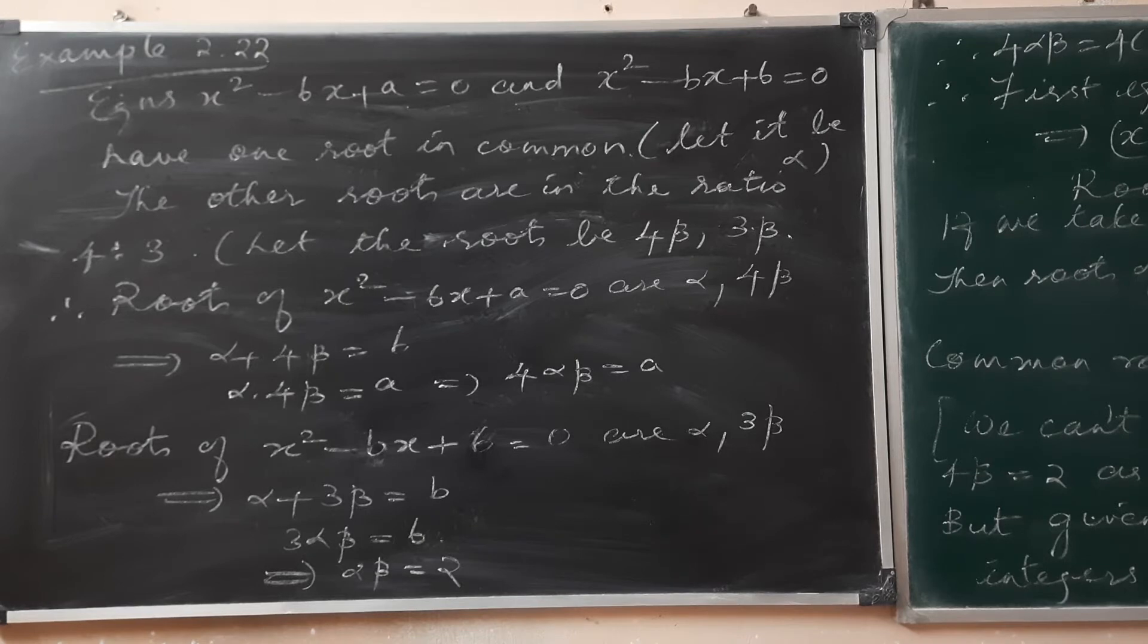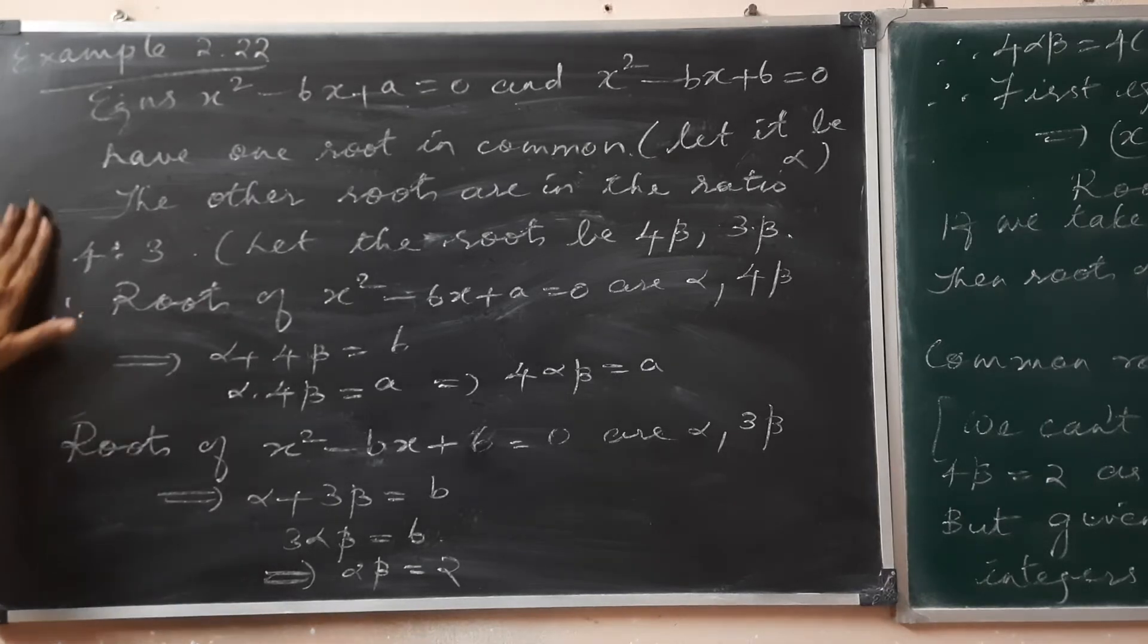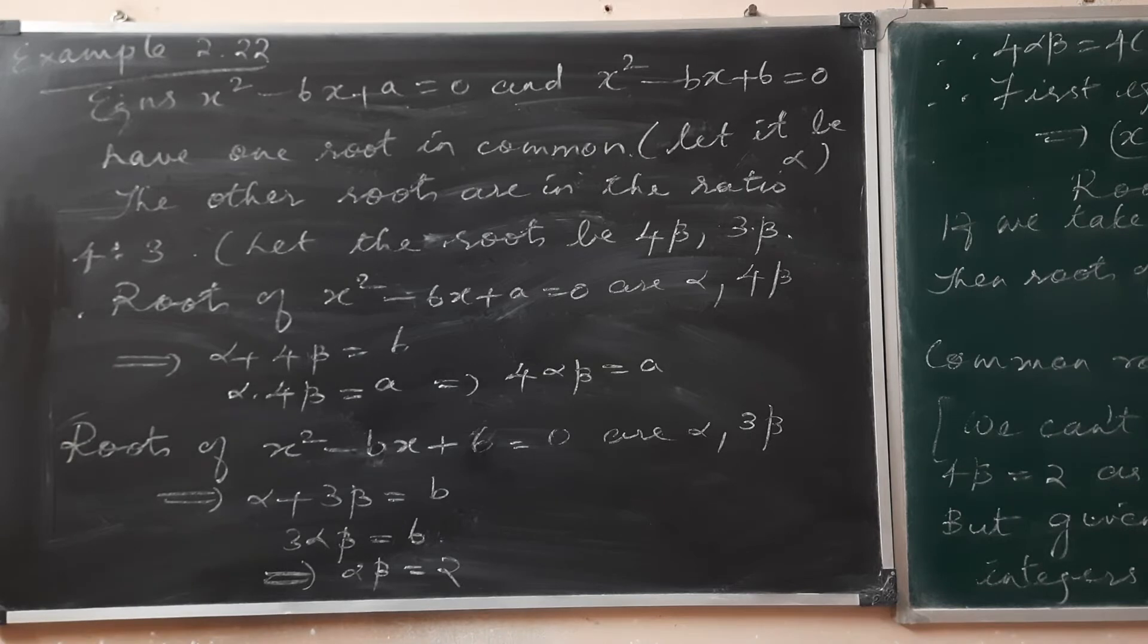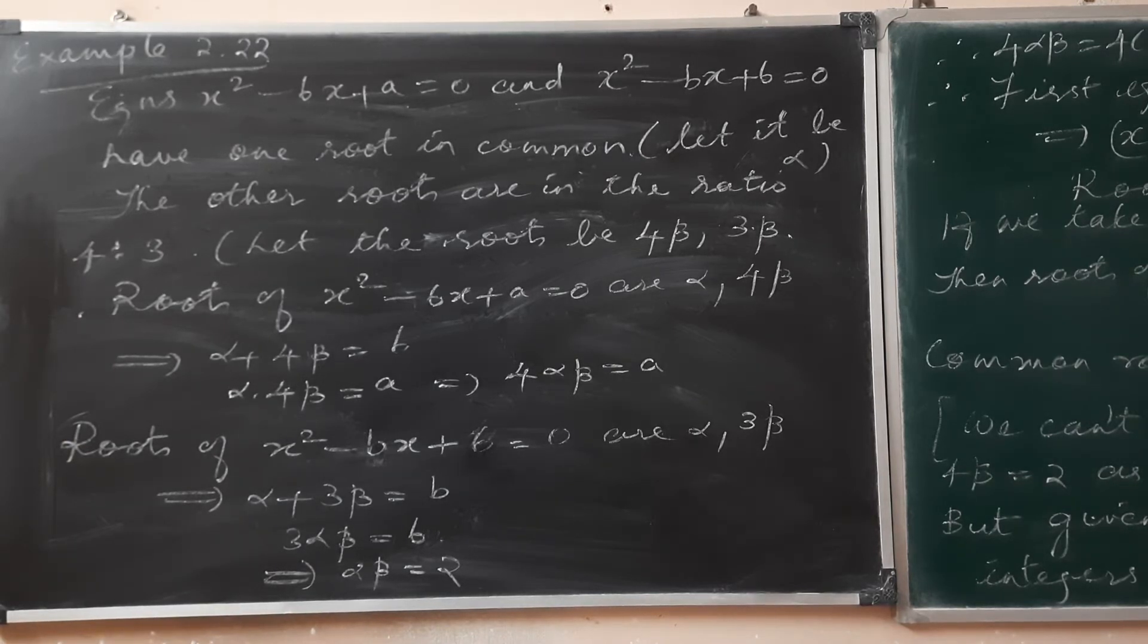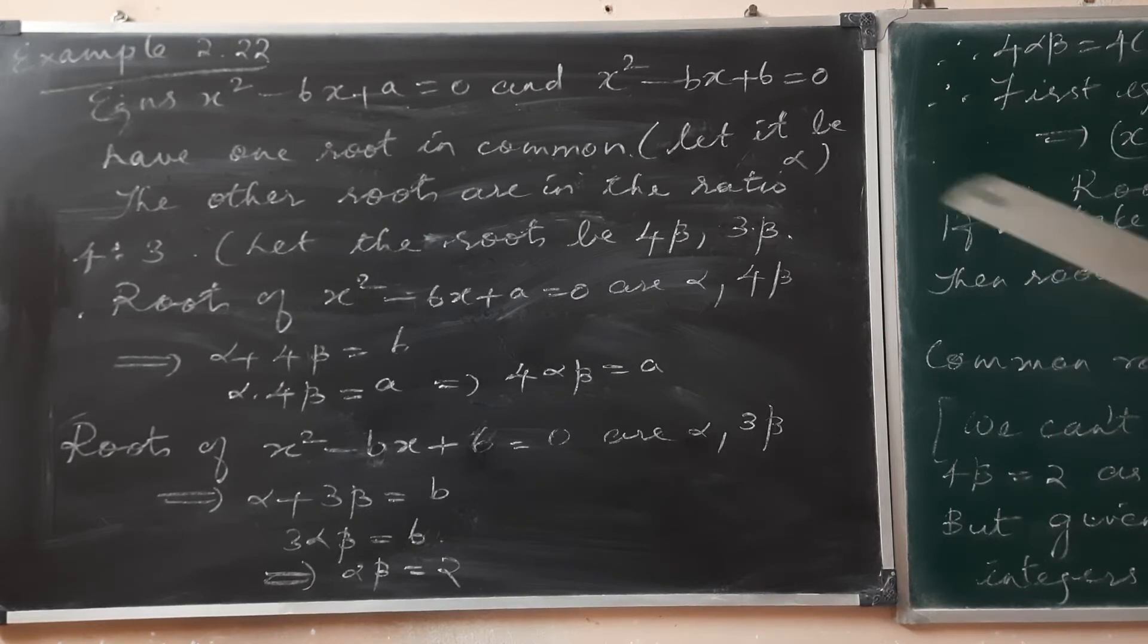They have one root in common and the other roots are in the ratio 4 to 3. So this root is 4β and the other root is 3β. You can say that they are in the ratio 4 to 3, with β as the common factor.